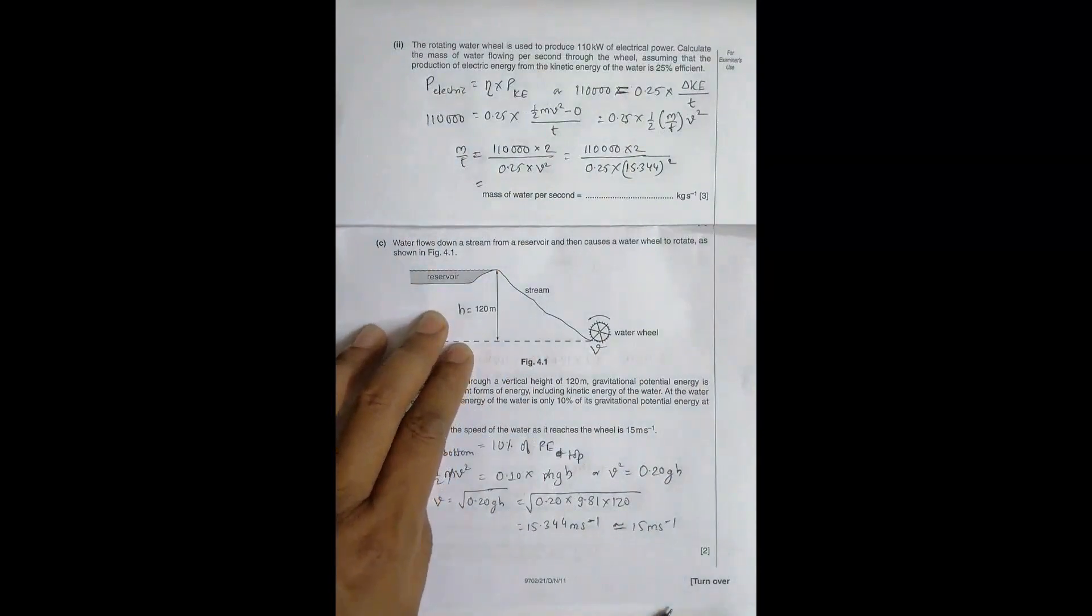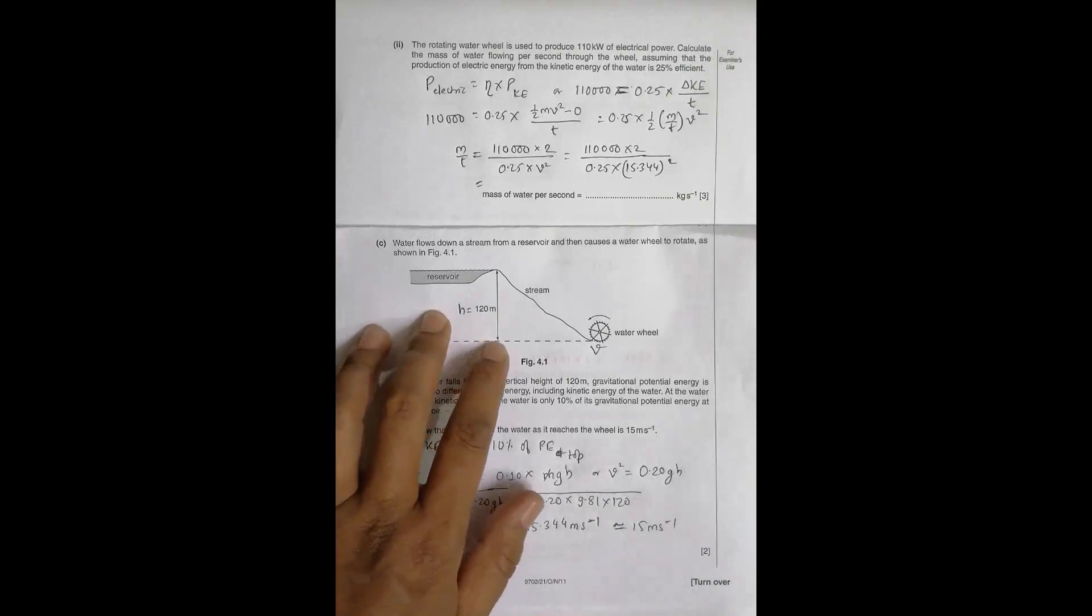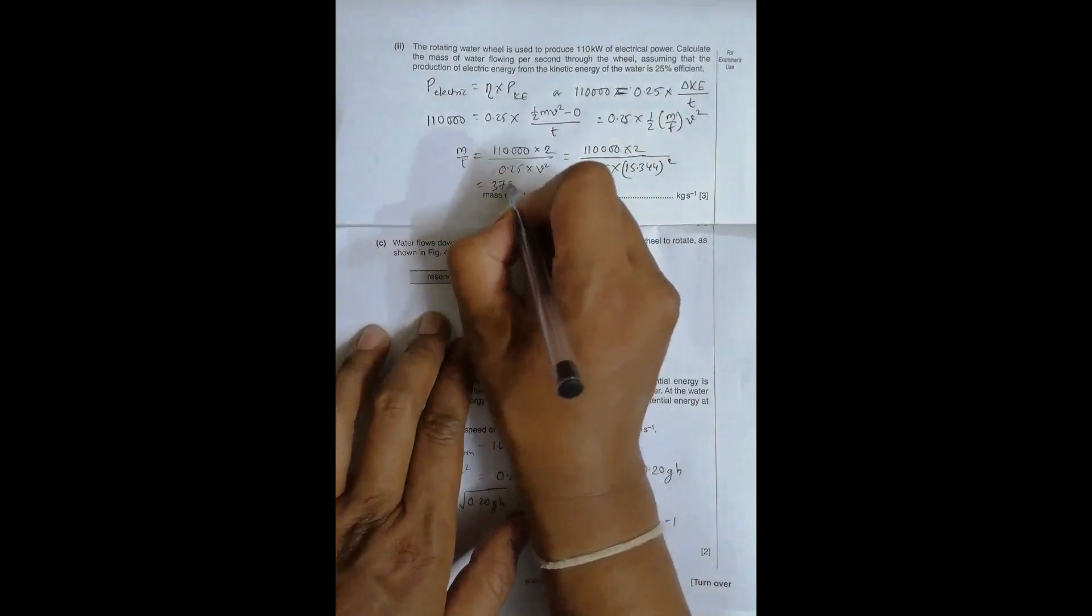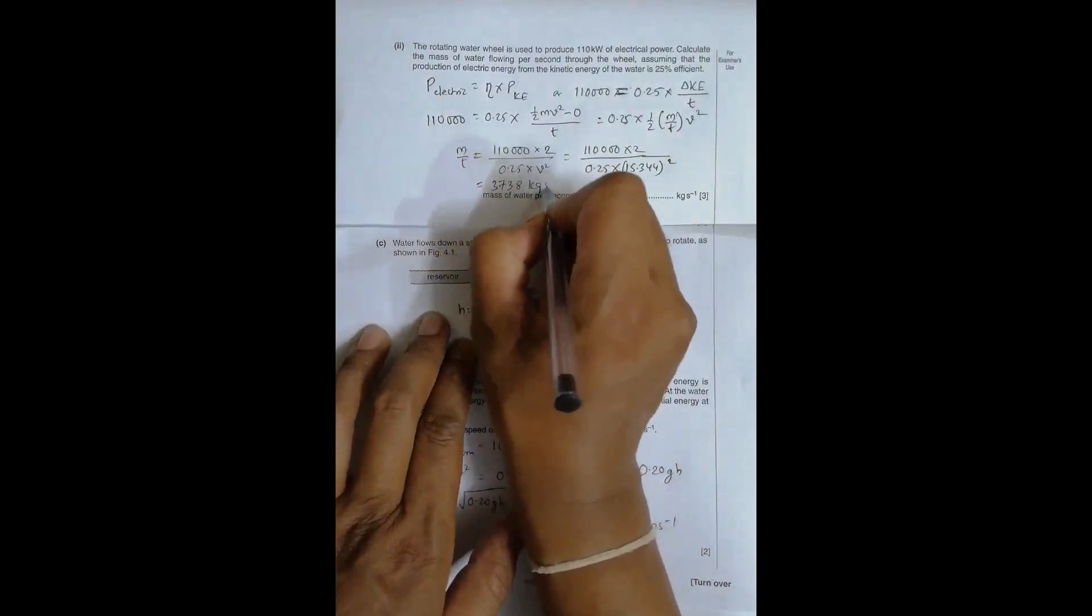so 110,000 into 2 divided, whole bracket, 0.25 into 15.344 square, very close, equal to, the value comes to be equal to, it is 3738 kg per second.